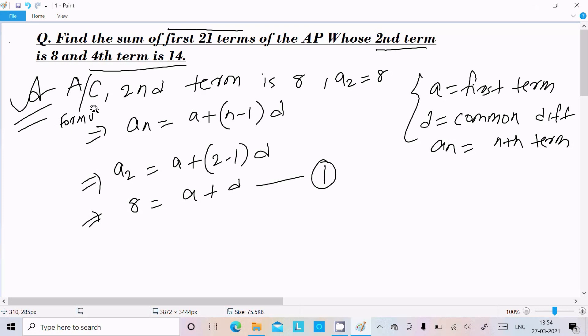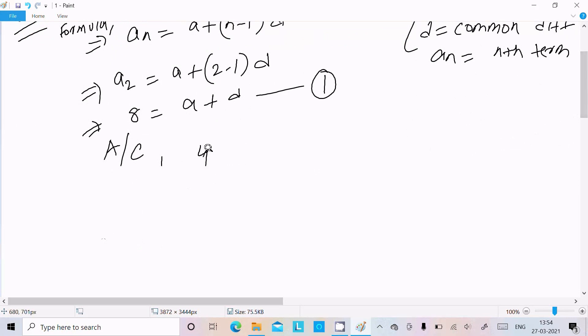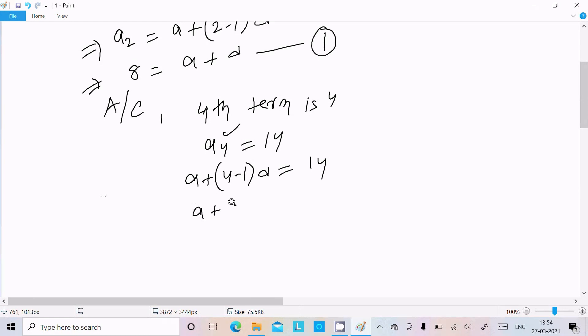Now according to the question, the fourth term is 14. So a_4 = 14, which means a + (4-1)d = 14. This becomes a + 3d = 14, which is equation 2.